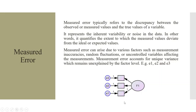Measurement error. So this is the error which is on the measured variable, also known as statements or indicators. Measurement error typically refers to the discrepancy between the observed or measured variable and the true values of the variable. It represents the inherent variability or noise in the data. In other words, it quantifies the extent to which the measured values deviate from the ideal or expected values. Measurement error can arise due to various factors such as measurement inaccuracy, random fluctuations, or uncontrolled variables affecting the measurement. Measurement error accounts for unique variance which remains unexplained by the factor level.